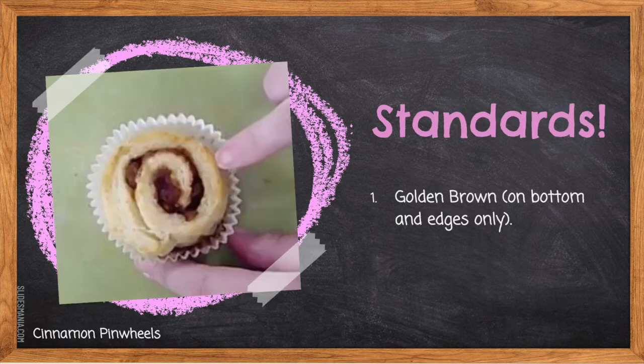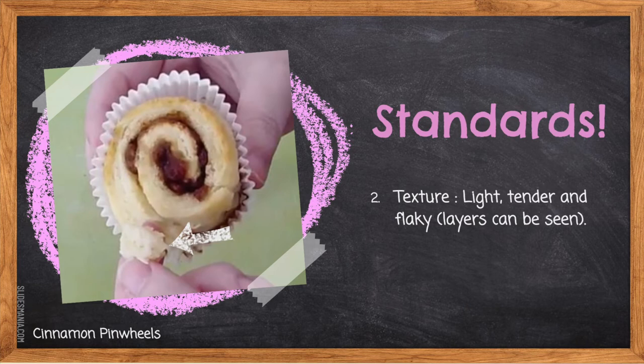Standards: 1. Golden brown on bottom and edges only — biscuit dough is often quite pale. It's only in the oven for less than 15 minutes so it shouldn't be golden brown throughout; only visible on the bottom or on the very edges exposed to air. 2. Texture — light, tender, and flaky; layers can be seen. When broken apart, you should see a compact structure with layers separating nicely. Large gluten tunnels indicate the dough was overhandled or too much water was added.